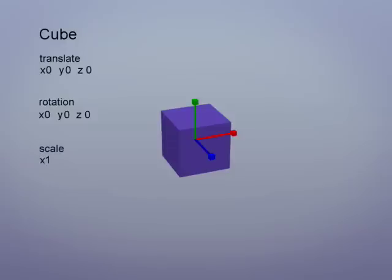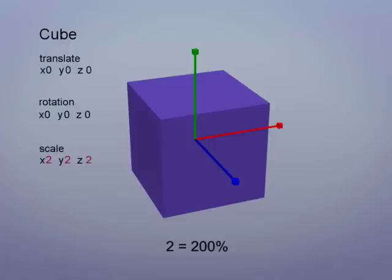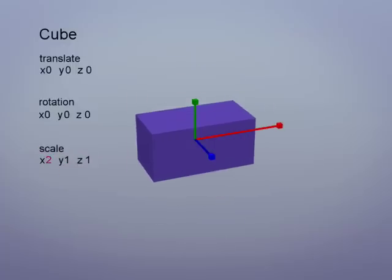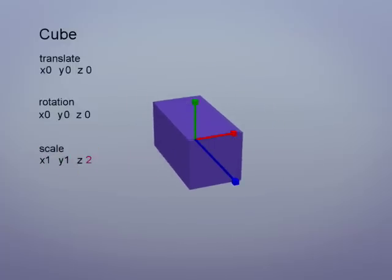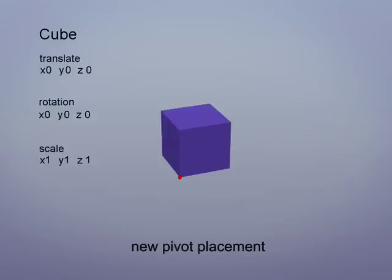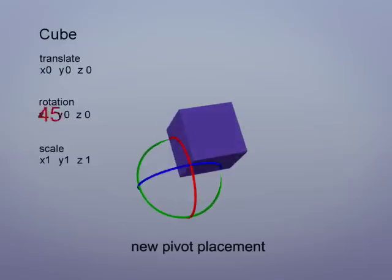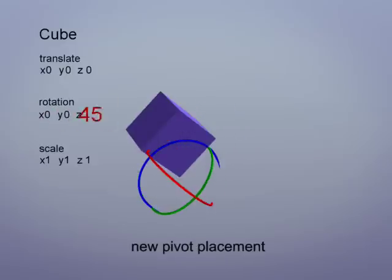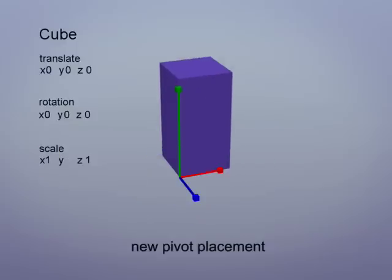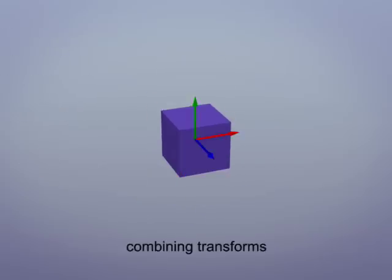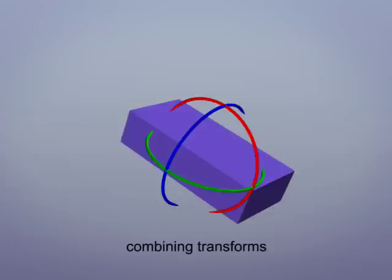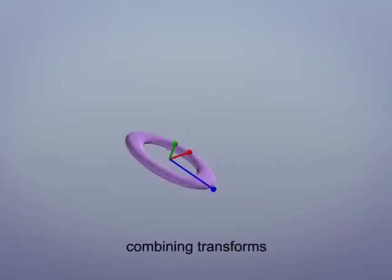Next, we can scale the object. In this case, 1 represents 100% of the object when it was built, so 2 equals 200%. Objects can be scaled on each of their three axes to squash and stretch their shape. The placement of the pivot will affect how each object is rotated and scaled. Here we're rotating the cube with its new pivot placement, and now we're scaling. So by combining translation, rotation, and scale, we can place objects in a variety of positions and sizes, and this is the same for any type of object.